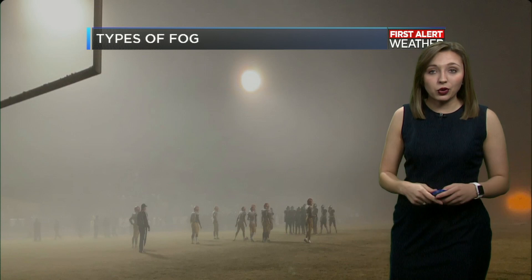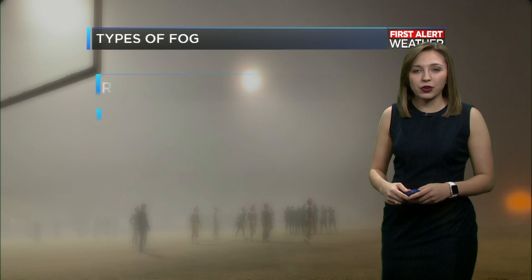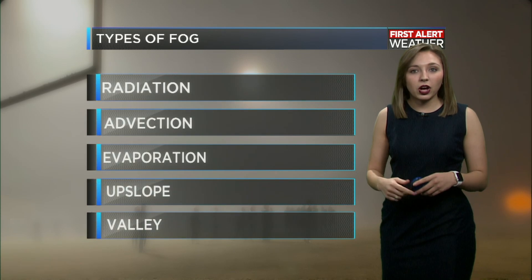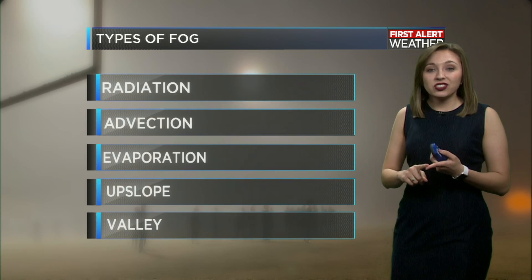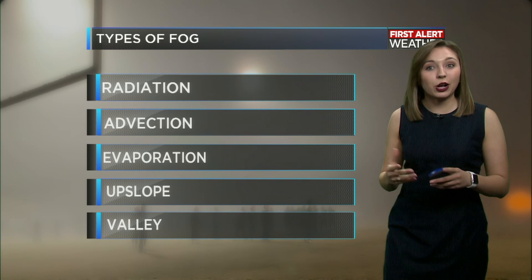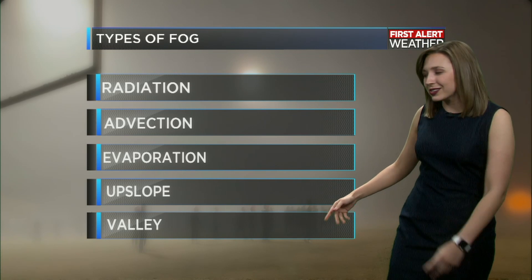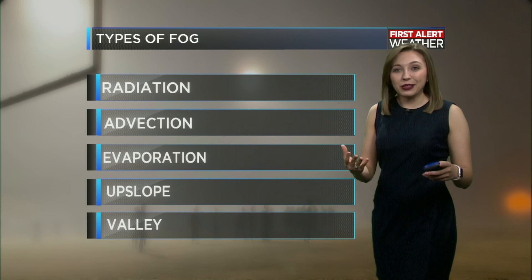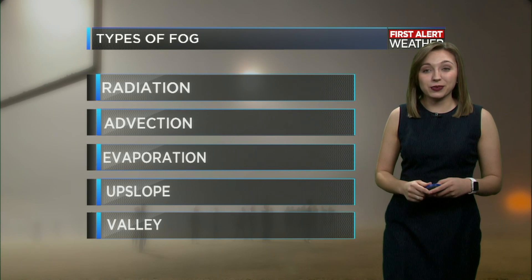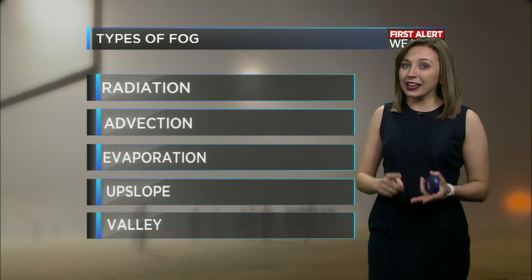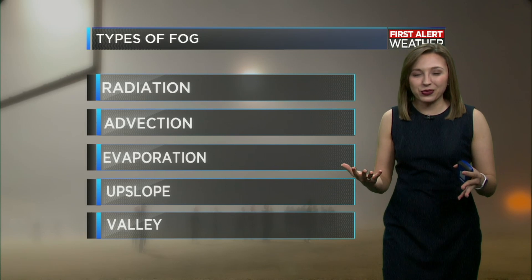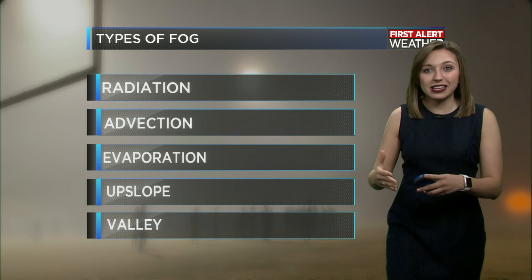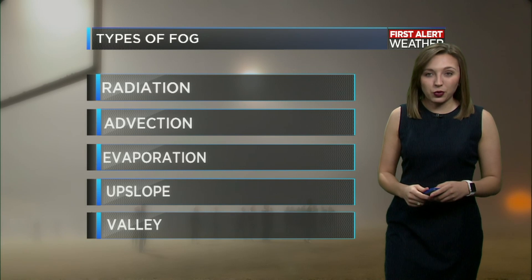How did this fog form? We'll get into that in a second, but first we've got to get through the types of fog. There are five types of fog. The first three — radiation, advection, and evaporation — can all form here. The last two, upslope and valley, are not going to happen here as we don't have any upslopes or valleys. It's pretty flat here in South Louisiana. You'll have to get into the hills and mountains to see upslope and valley fog form.